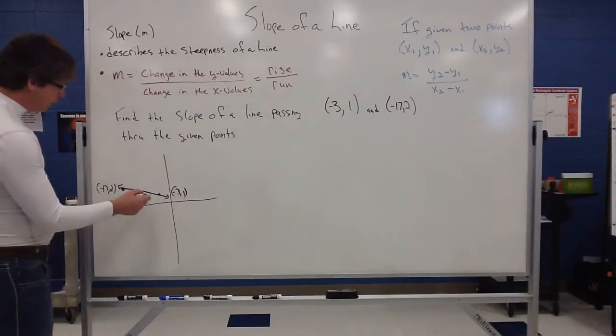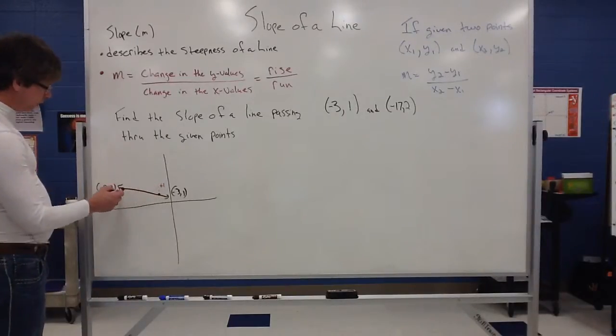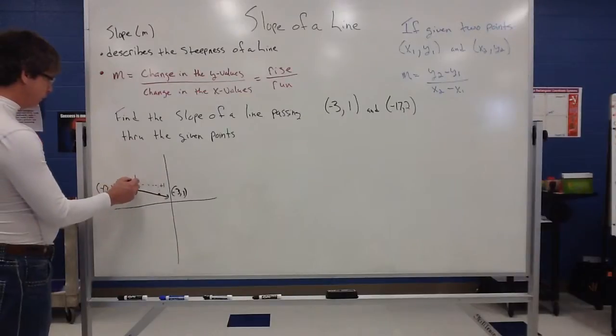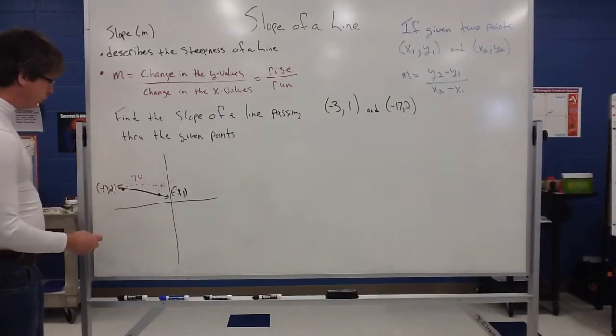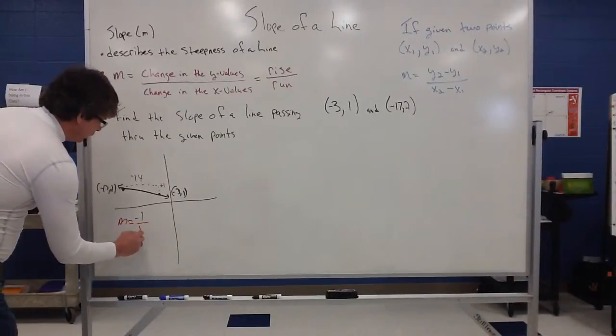Now if I do the rise and run, it looks like it's going to rise up 1. And from (-3) to (-17), that looks like that's going to be a run of 14 to the left. So what I'm picking up on is my slope is a negative 1/14.